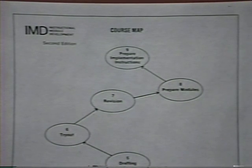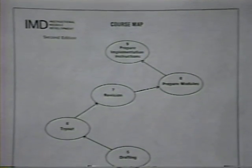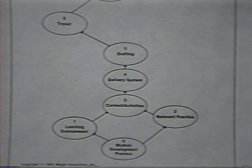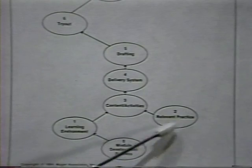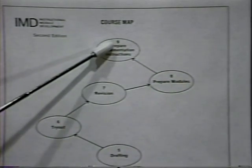Let me show you some examples of some course maps. Here is a course map from our instructional module development workshop. As you can see in this map, there is only one option here at the beginning — students can move to this module or to that module. From then on throughout the remainder of the course, it is just a sequence of units to complete.